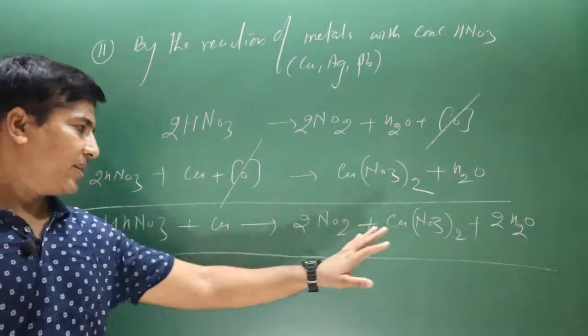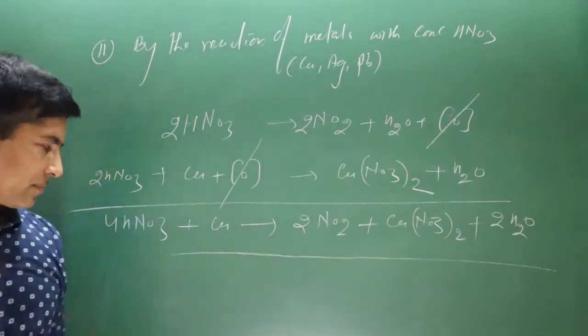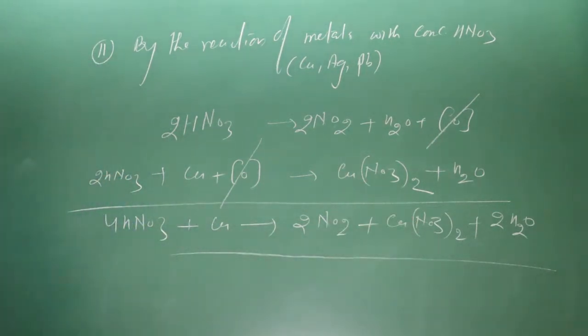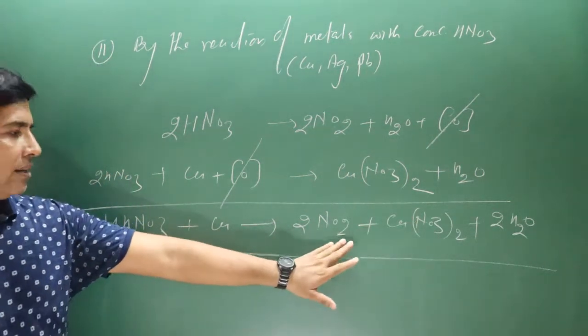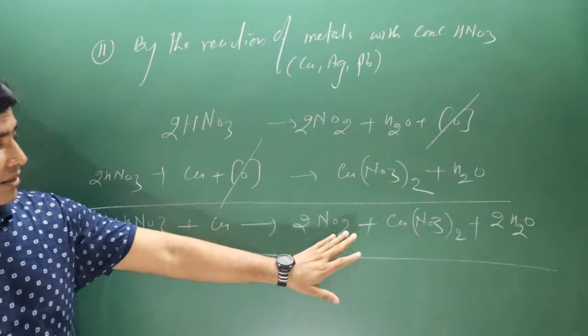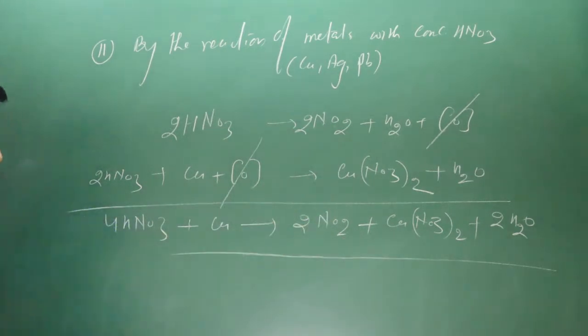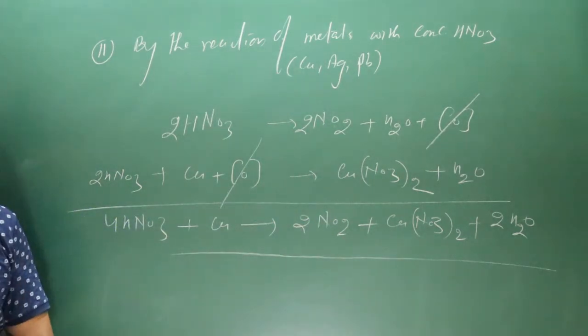Copper is being oxidized by nitric acid, releasing nitrogen dioxide. Now let's consider silver reacting with concentrated nitric acid.